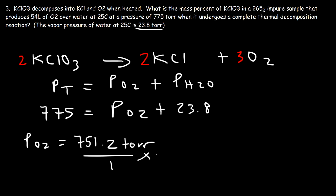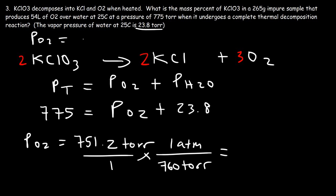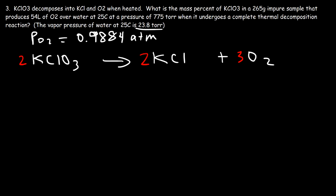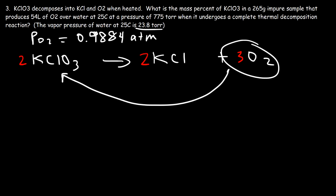We need to convert 751.2 Torr to ATM by dividing by 760, giving 0.9884 ATM. Using the partial pressure of O2 we can calculate the moles of O2, and from that we can calculate the grams of KClO3 consumed and then find its mass percent in the impure sample.